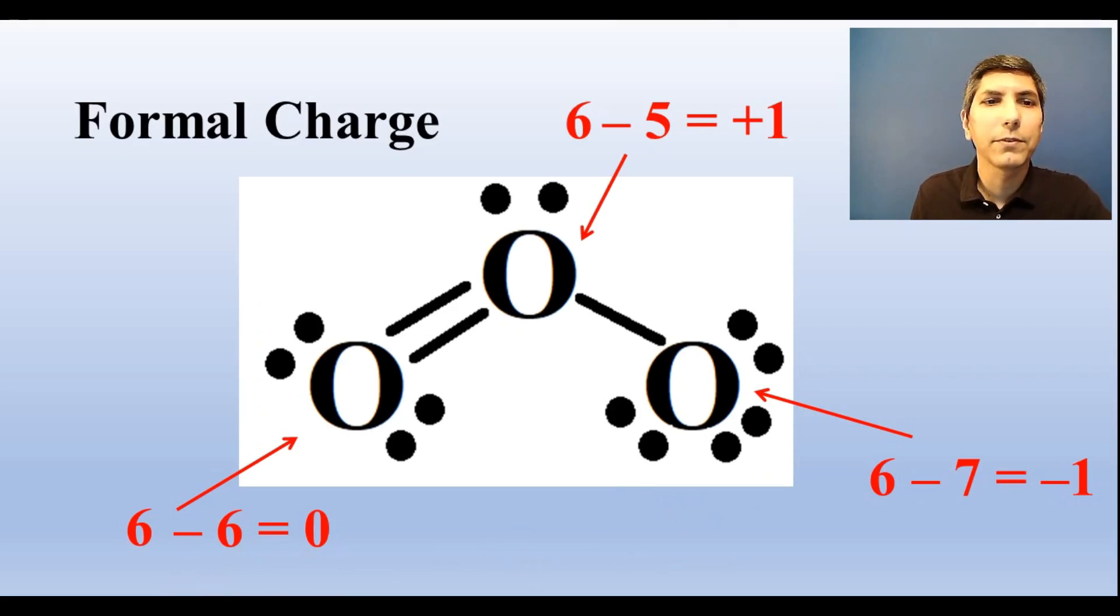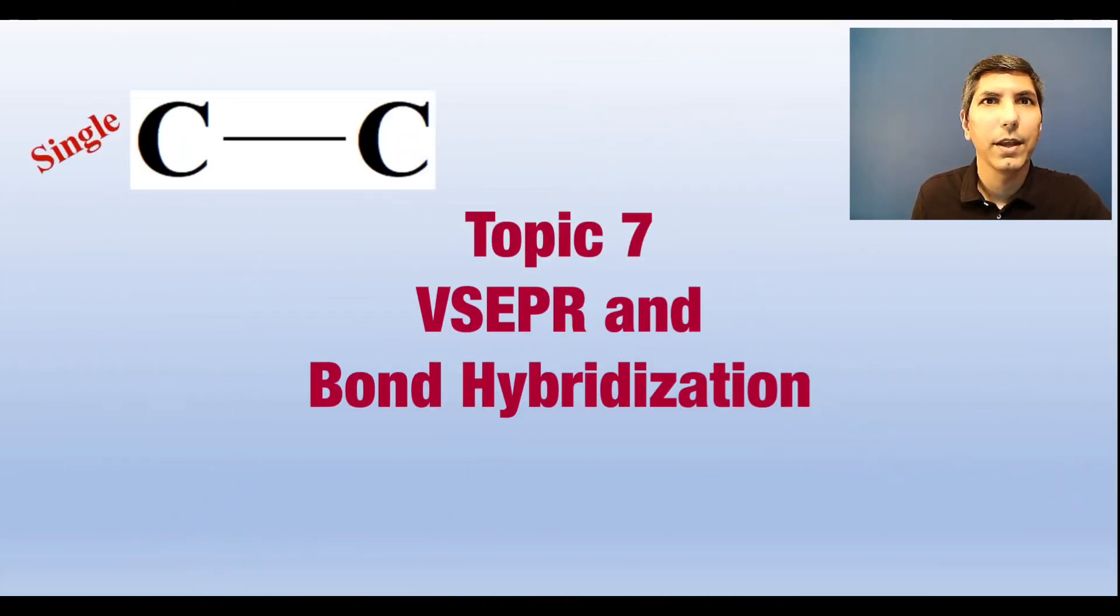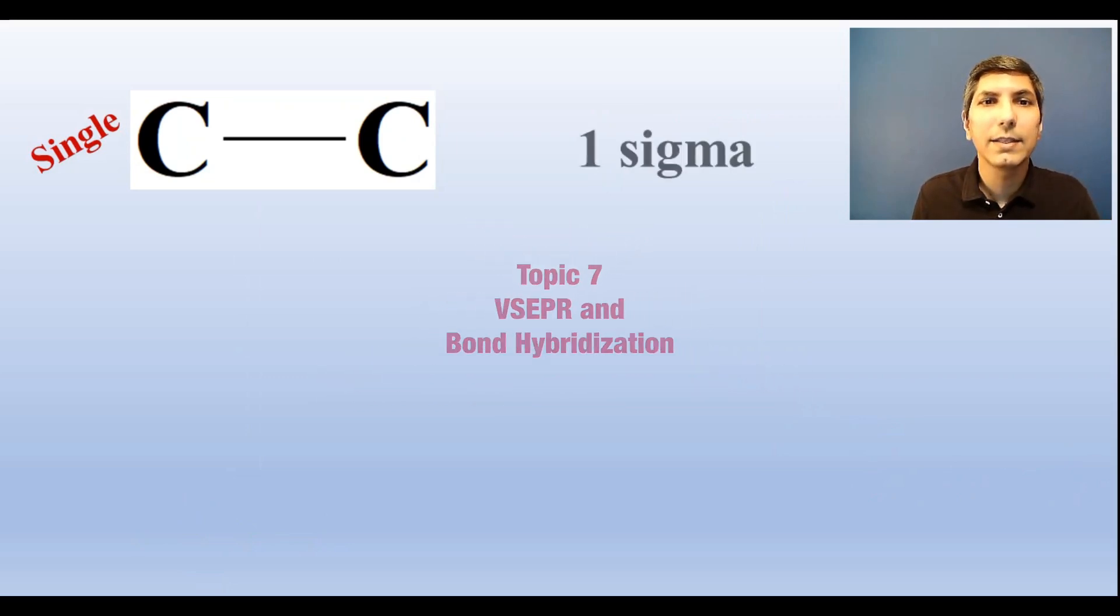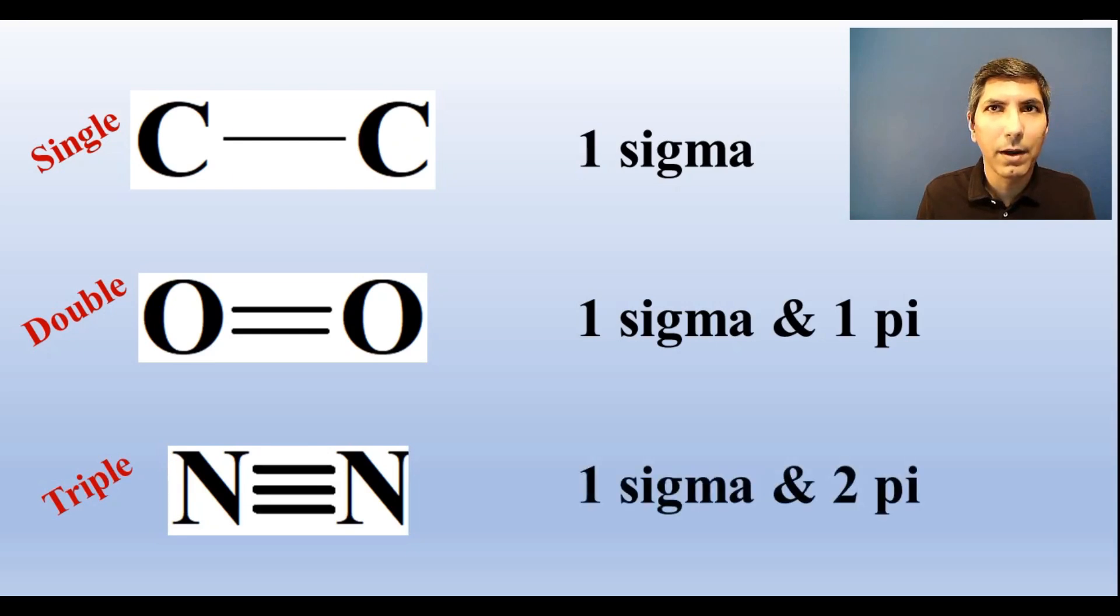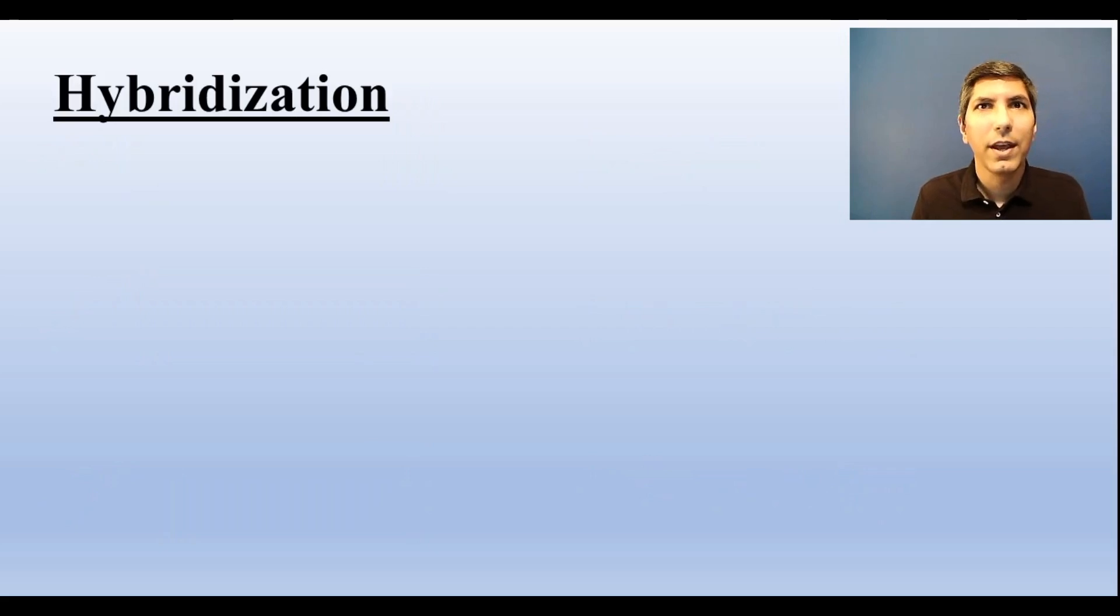Make sure you can count the number of sigma and pi bonds in a molecule. Every single bond is a sigma bond. Every double bond is composed of one sigma bond and one pi bond. And every triple bond is composed of one sigma bond and two pi bonds.